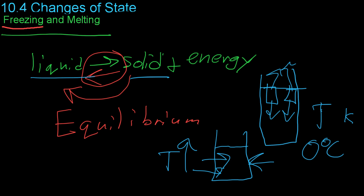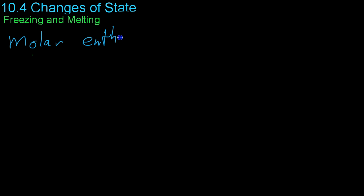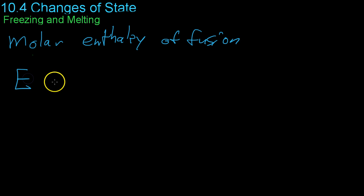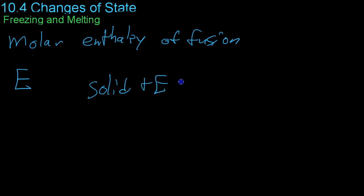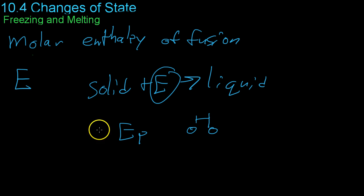Just as we talked about the energy required to overcome intermolecular forces in a liquid in order to boil in the last video, similarly, there is a property of all substances called the molar enthalpy of fusion. This is a measure of the energy that is absorbed when a solid transforms into a liquid — it measures the energy added in the form of potential energy that separates the various molecules from one another once they're in a liquid state. As we just discussed, this whole reaction takes place at a constant temperature.